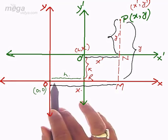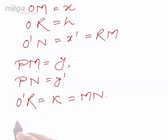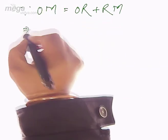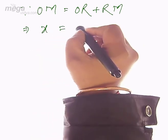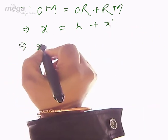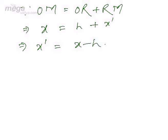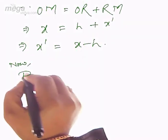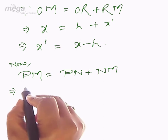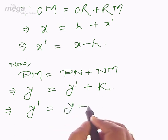From the figure you can write: OM = OR + RM. Substituting the values: X = H + X-dash, so X-dash = X minus H. Similarly, PM = PN + NM, so Y = Y-dash + K, which gives Y-dash = Y minus K.